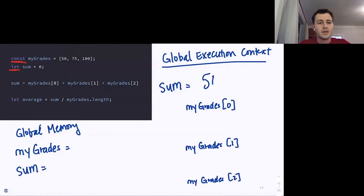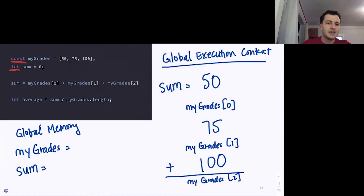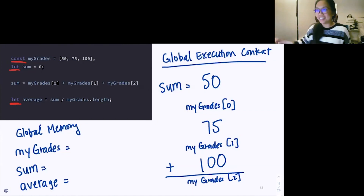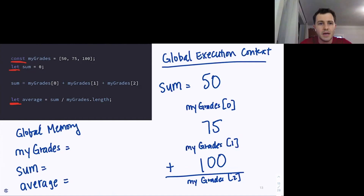Then we are assigning a new variable called average — which is also mutable because it uses let — and that is equal to the variable sum divided by myGrades.length, which is basically the length of myGrades.